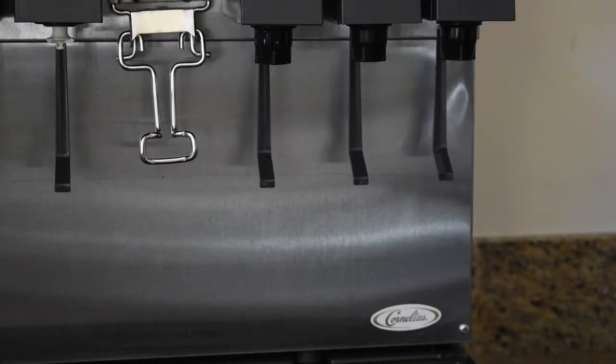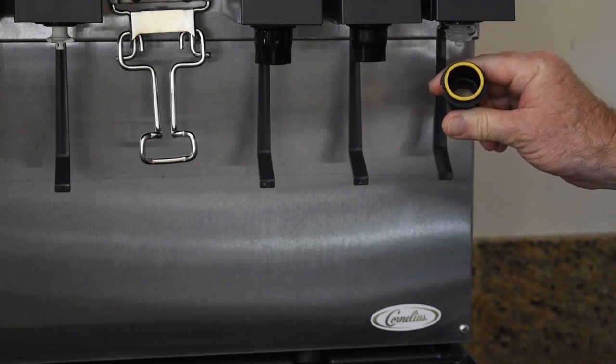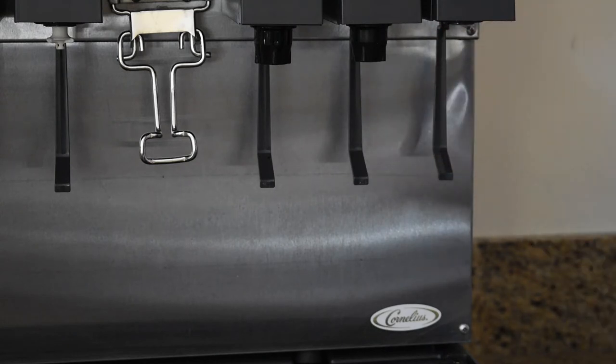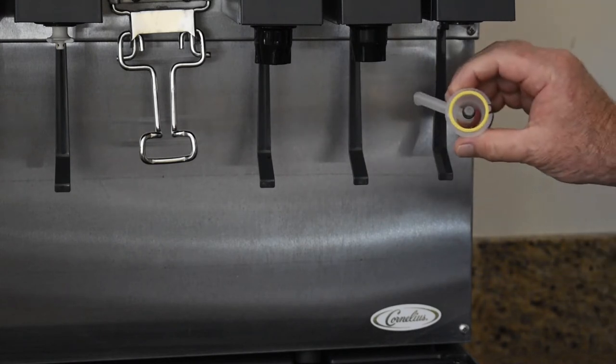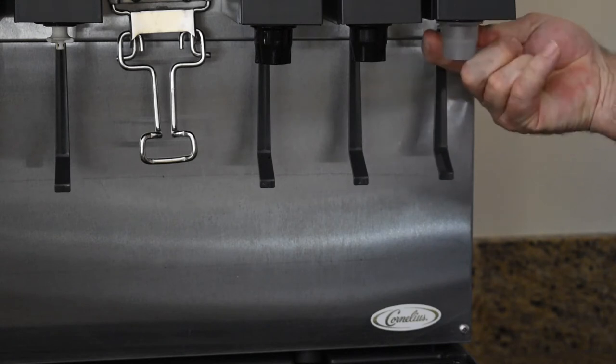Before you begin, you will need to identify the valve you are working on. The 3.0 valve will have a yellow ring at the top and will have a two-piece nozzle and diffuser assembly. Use the syrup separator with a yellow ring at the top. The proper water flow rate for a 3.0 valve is 10 ounces in 4 seconds.